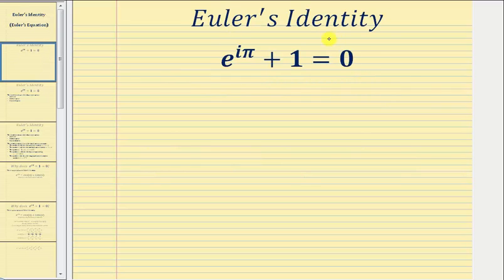Euler's Identity is the equation e raised to the power of i times pi plus one equals zero.